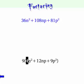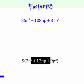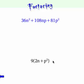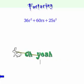Alright. So we take the square root. And that gives us 2n. And we take the square root of the last term. Which is going to be 3p. And then square the whole thing.